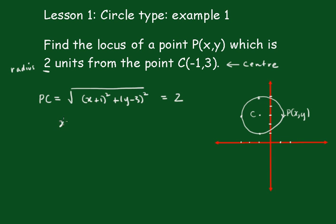Squaring both sides, we get x plus 1, all squared, plus y minus 3, all squared, is equal to 4.